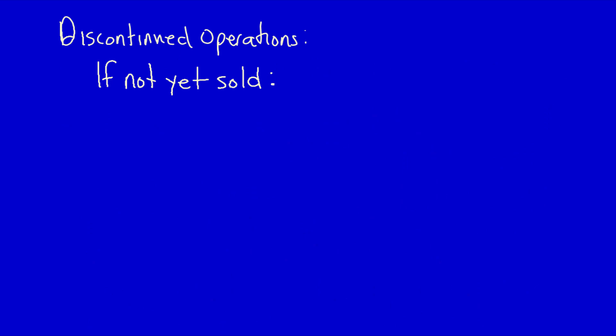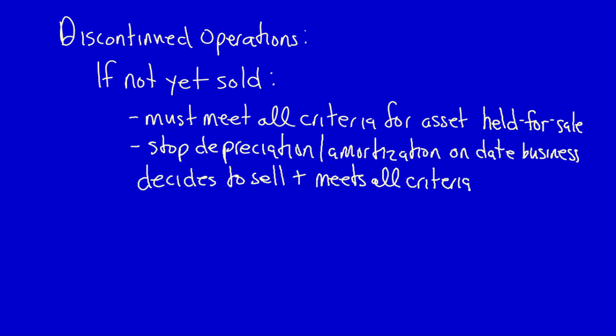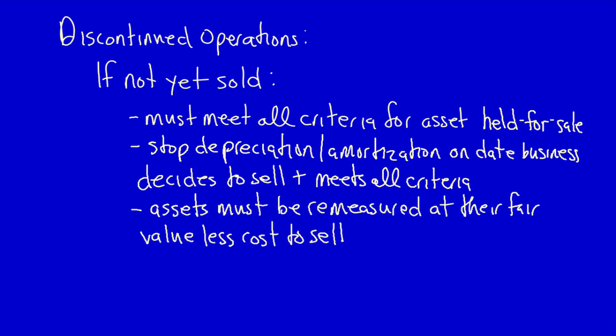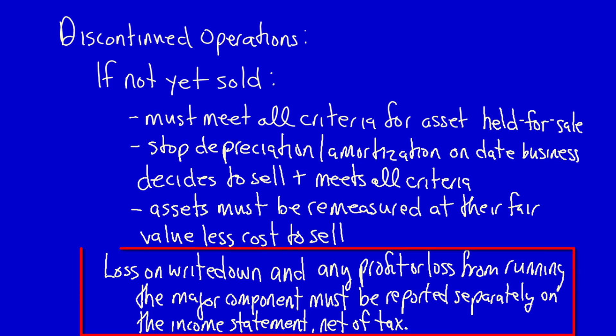This is an important differentiation between an asset or asset group held for sale and discontinued operations. If the major component of the business has not yet been sold, it must meet all the criteria for an asset held for sale — depreciation or amortization must stop, and the assets have to be remeasured at fair value less cost to sell. However, the loss from writing down the assets of this major component, as well as any loss or profit from continuing to run this component until the day it is sold, must be recorded separately on the income statement, net of tax. This is the major difference between something denoted as discontinued operations and something denoted simply as an asset or asset group held for sale.